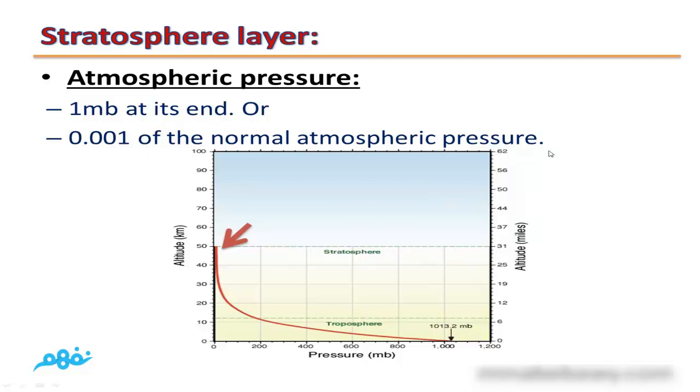Of the normal atmospheric pressure, because if you divide 1 by the normal atmospheric pressure which is equal to 1013.25, you will get approximately 0.001 of the normal atmospheric pressure.